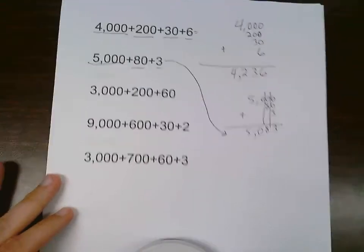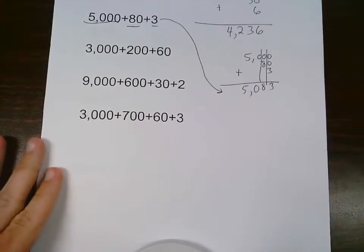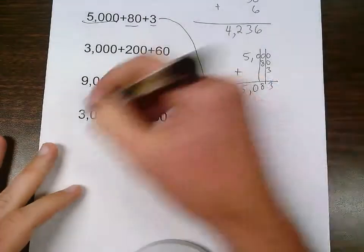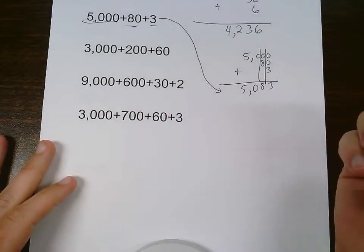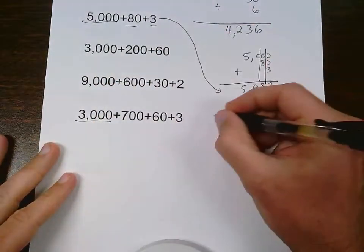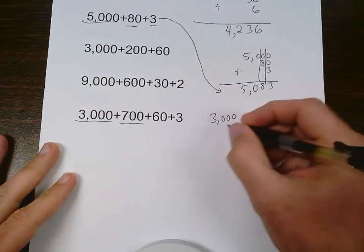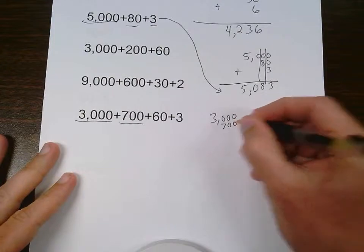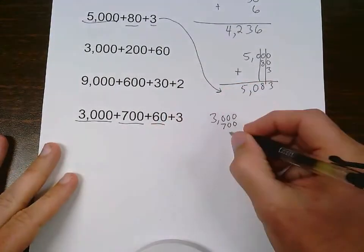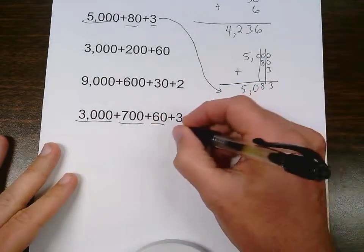We'll skip down to our last one here, because these are pretty simple. 3,000 plus 700 plus 60 plus 3. Once again, I write down the largest number. And then I write down the next largest number, making sure those place values are lined up. Next one, making sure those place values are lined up. And our last one.